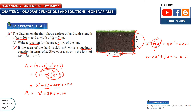So this is your quadratic function. It's similar to the general equation: ax² + bx + c. Your C is 100, your B is 25, your A is 1. And your function here represents area.